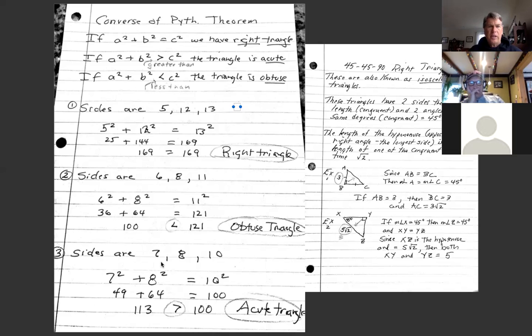Example three: 7, 8, and 10. When I use the same process, this time when I square and sum the legs, I get a number greater than the square of the hypotenuse. Up here it tells me that I have an acute triangle.